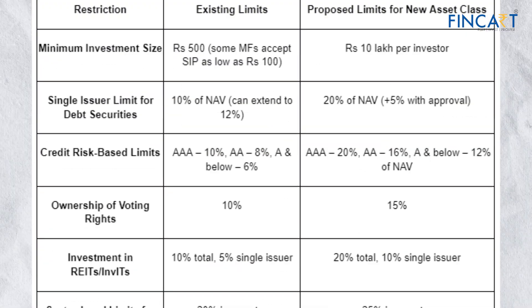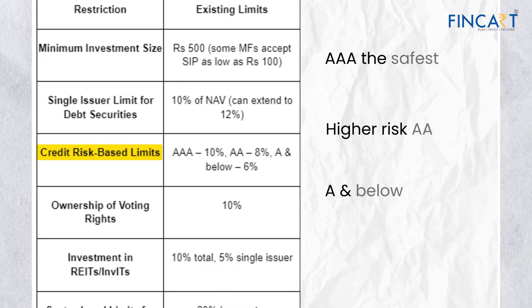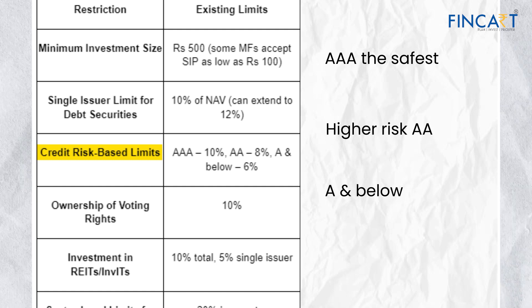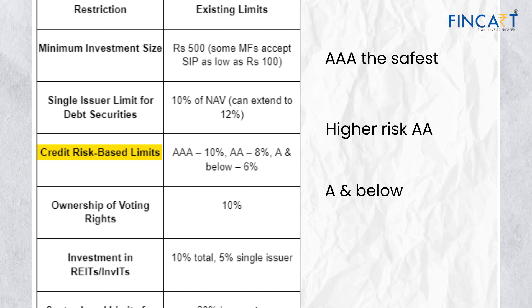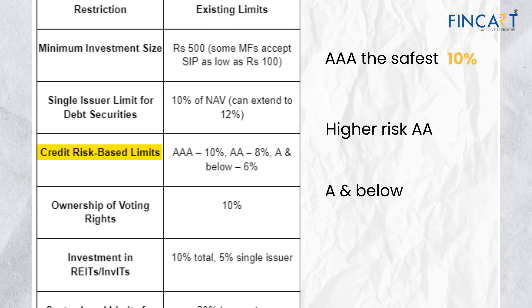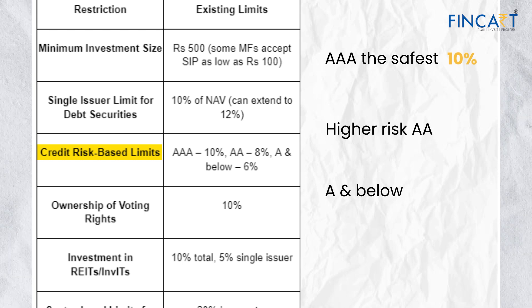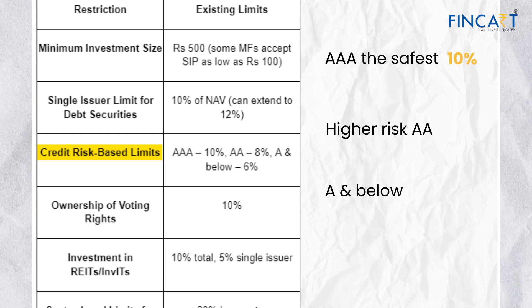Regarding credit risk: Triple-A is considered the safest, followed by Double-A, then A and below. Under current SEBI regulations, mutual funds can have a maximum exposure of 10% of NAV in a Triple-A and above rated paper.